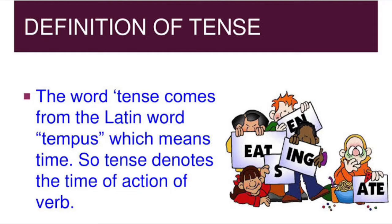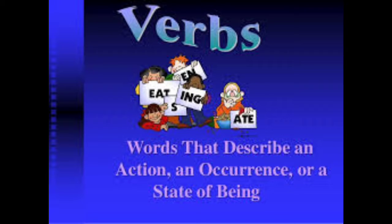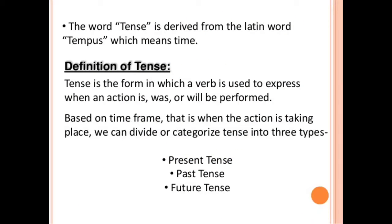What is meant by verb, children? Verbs are the words that describe an action, an occurrence, or a state of being. Tense is a form of verb which is used to express the action — when it takes place — that is, when an action is, was, or will be performed based on the time frame. We can divide or categorize tenses into three types.